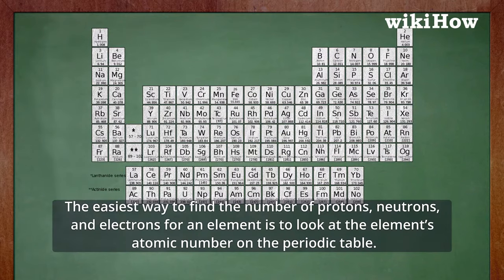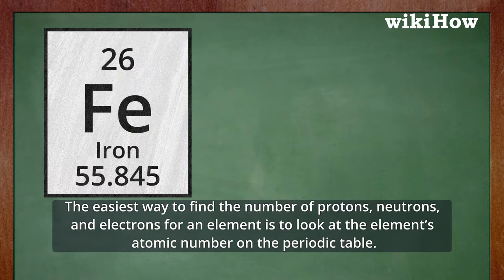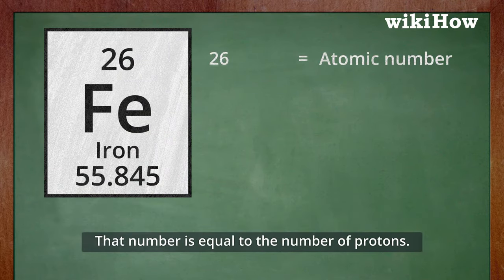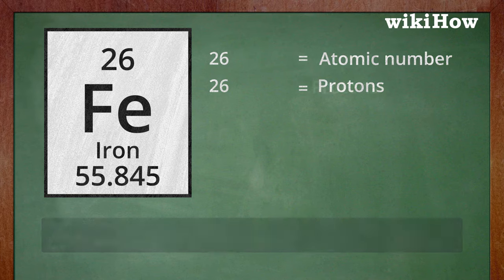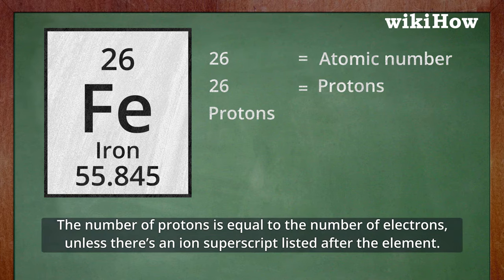The easiest way to find the number of protons, neutrons, and electrons for an element is to look at the element's atomic number on the periodic table. That number is equal to the number of protons. The number of protons is equal to the number of electrons, unless there's an ion superscript listed after the element.